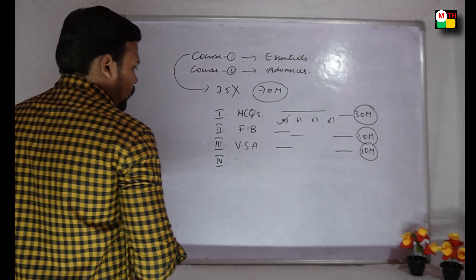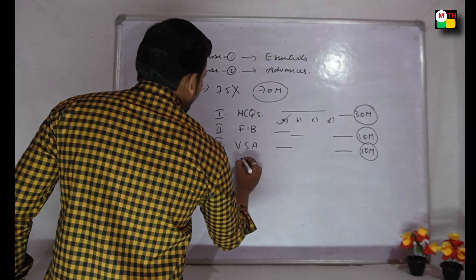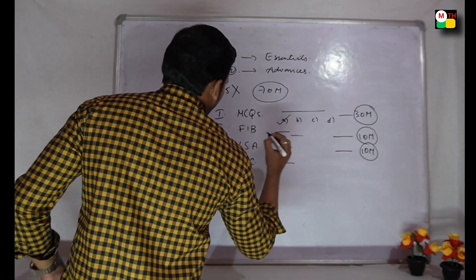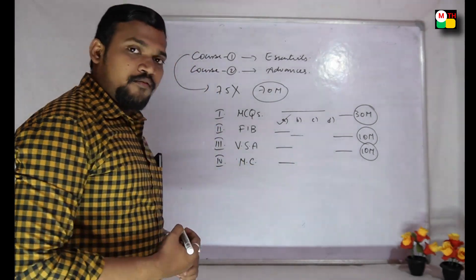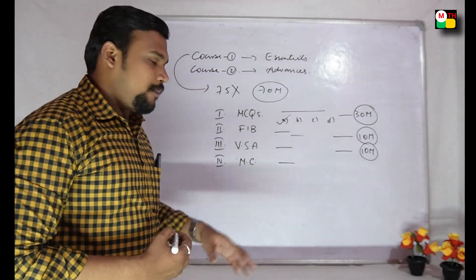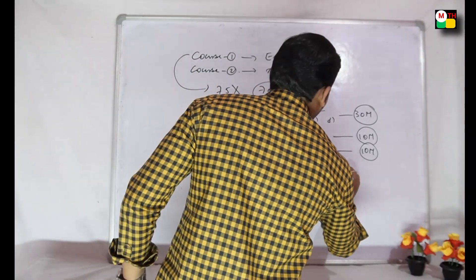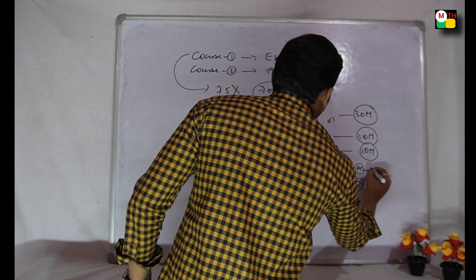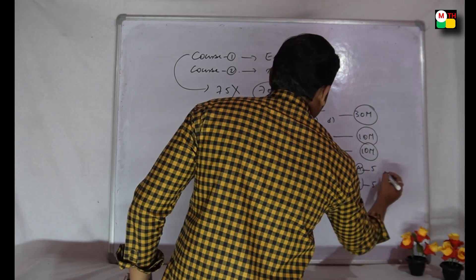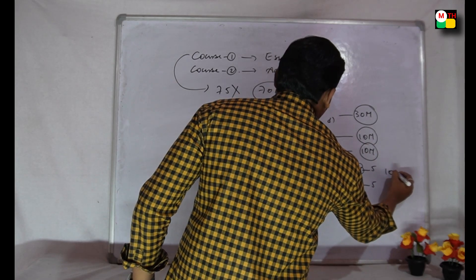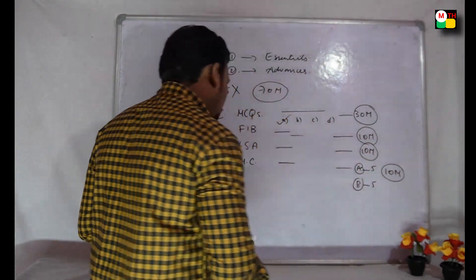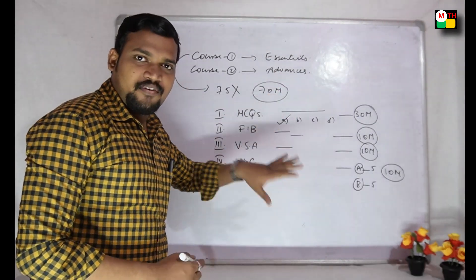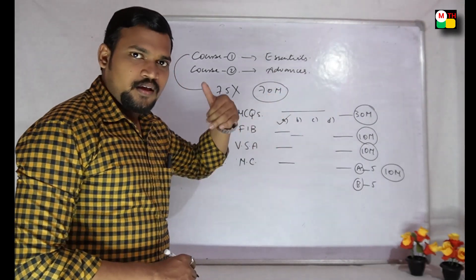Fourth Roman section: Match the following. Match the following — where you match items from column A with column B. This section carries 10 marks. Column A has 5 marks worth of items and column B has 5 marks worth of items. You can do the matching accordingly.